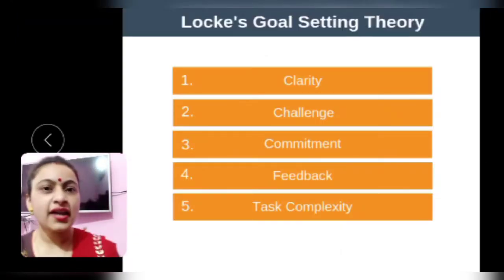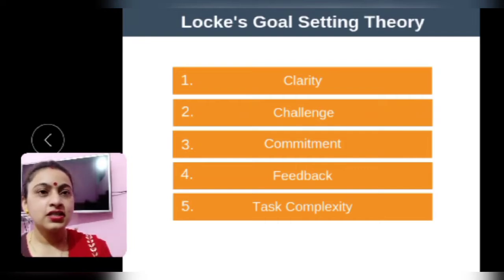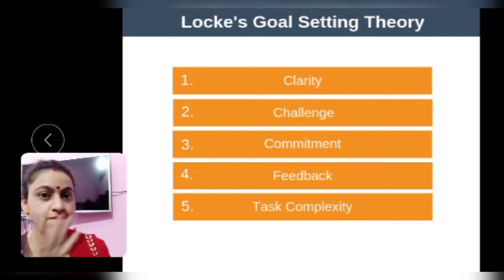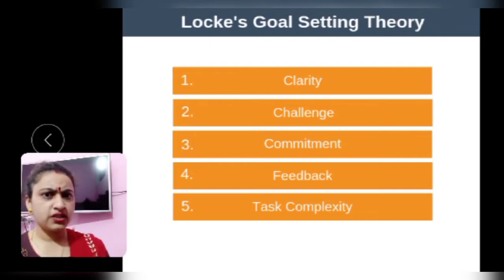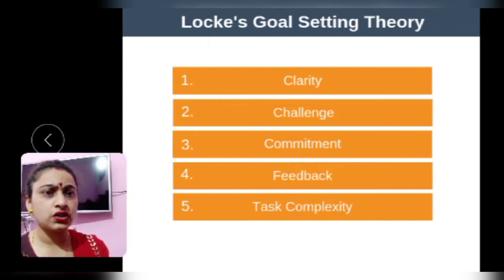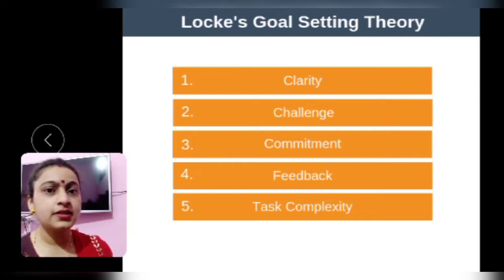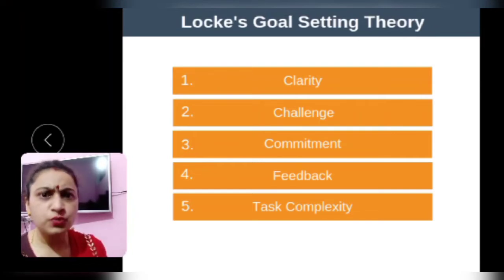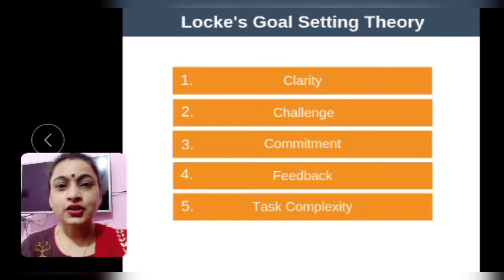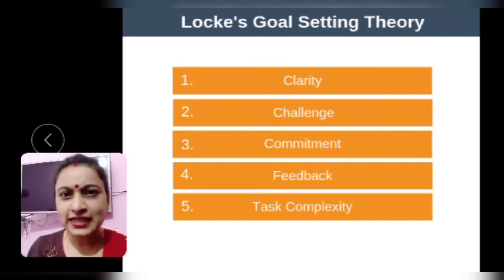Locke's goal setting theory gives us five points. First is clarity — you need to be very clear and have a clear vision of whatever you want to accomplish; only then can you set a goal and plan accordingly. Second is challenge — it has to be challenging. If it is not challenging, you are not going to work hard. You will not do anything to accomplish it, so keep it a challenging one, not an easier one.